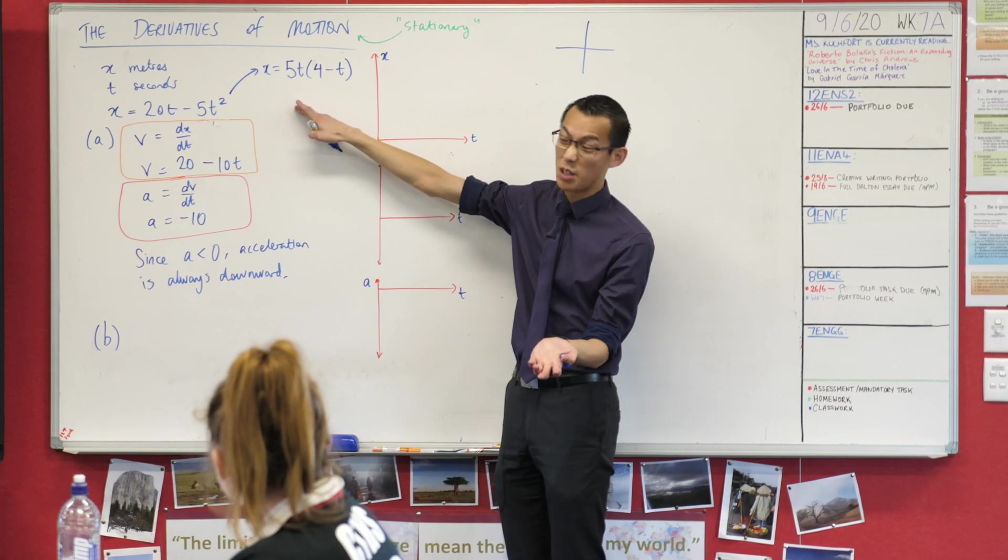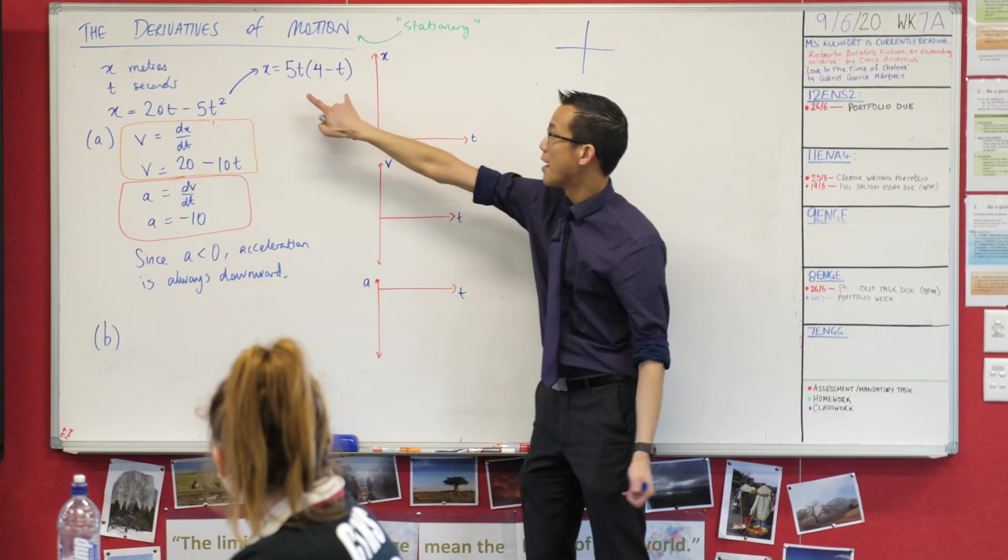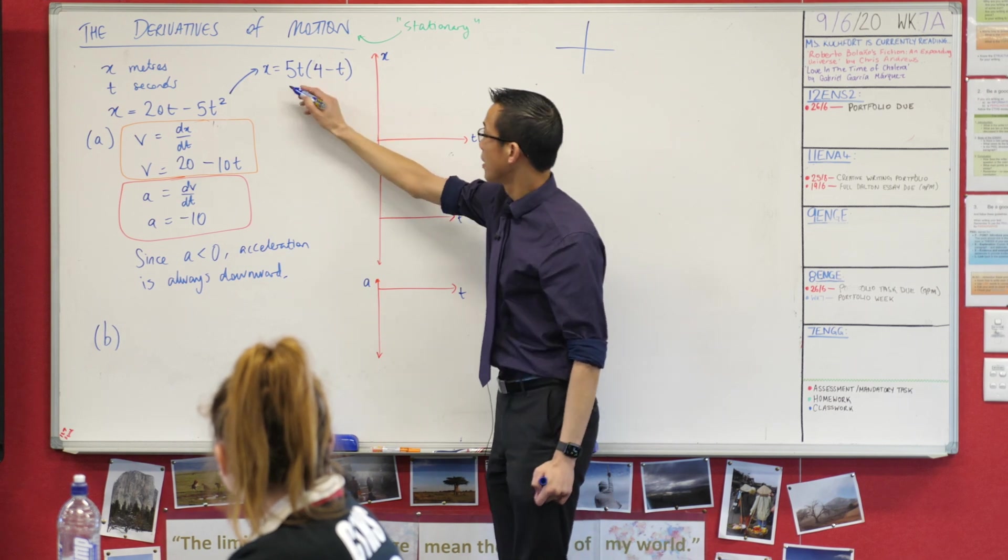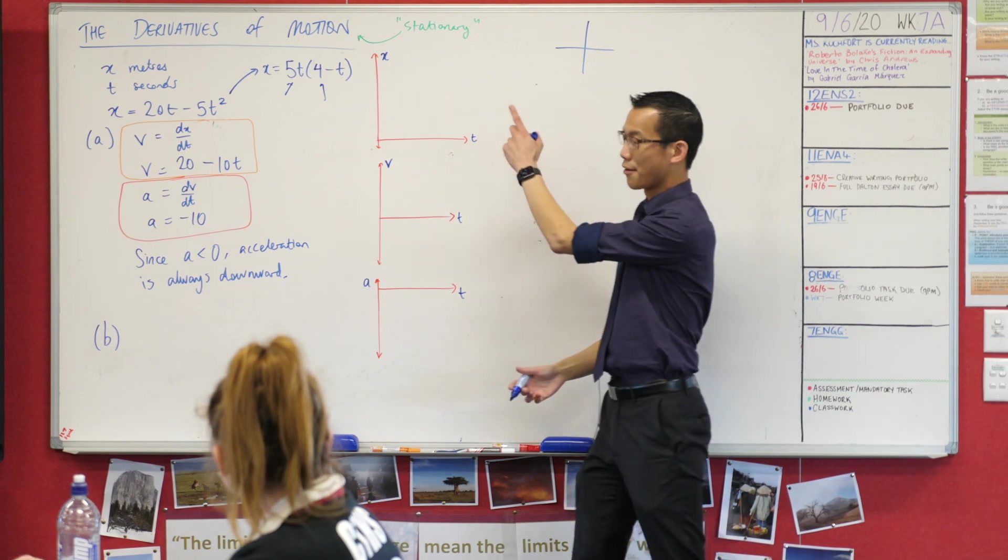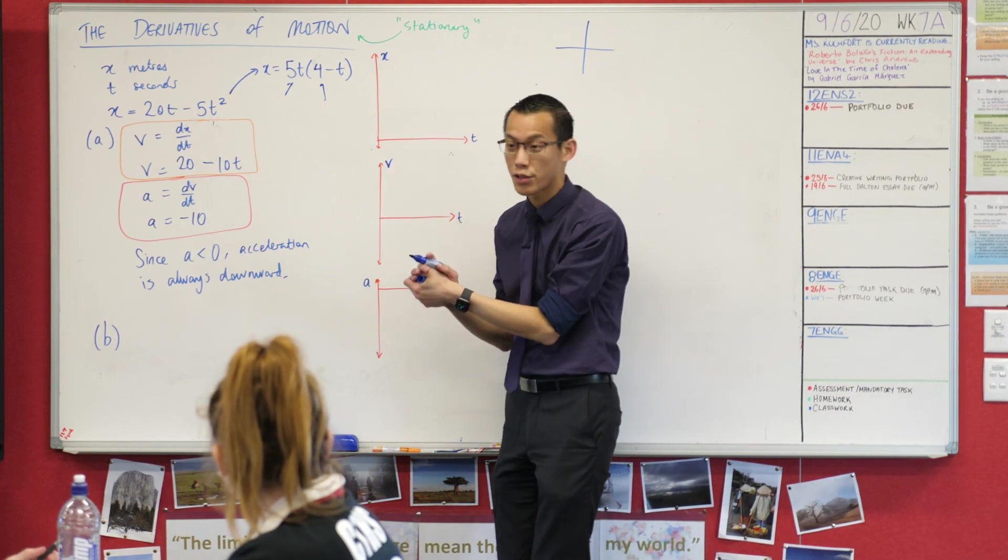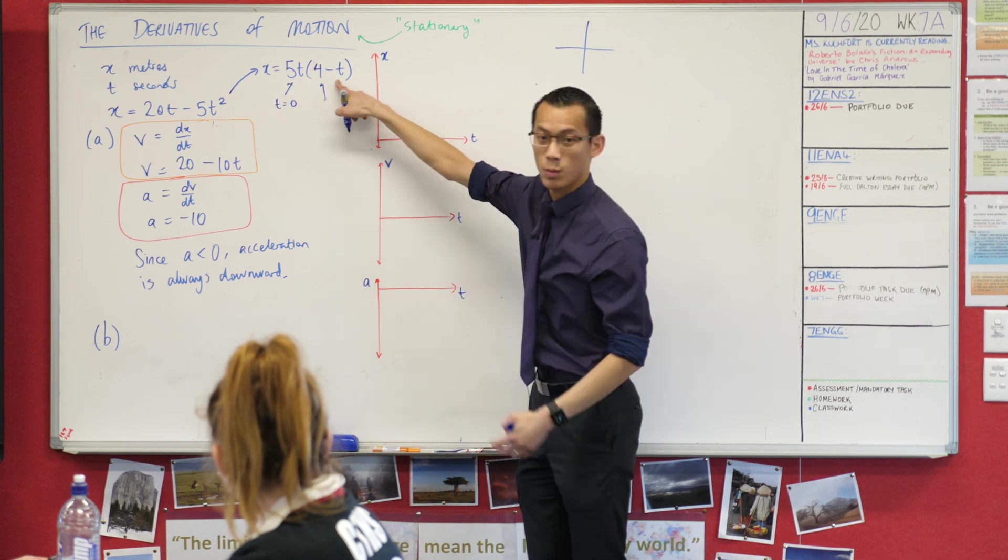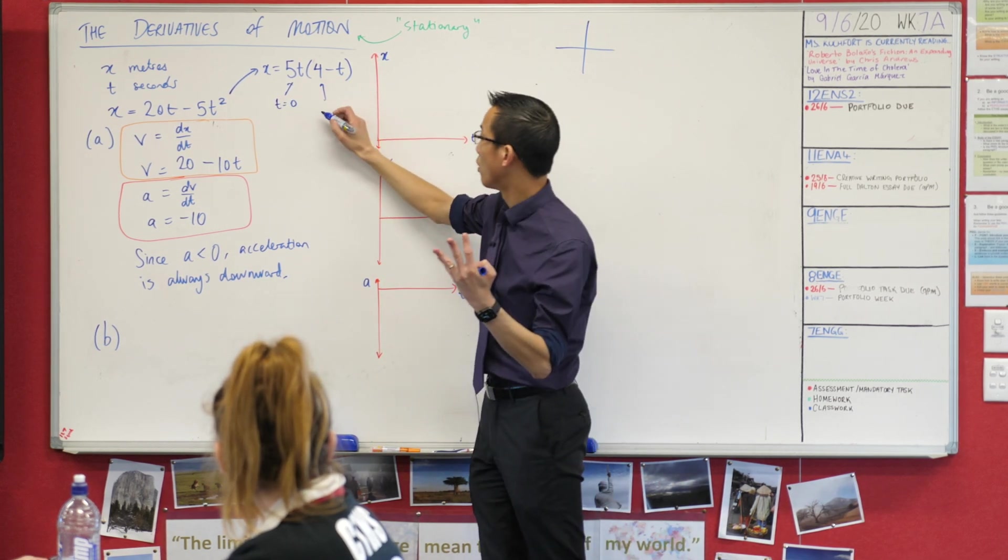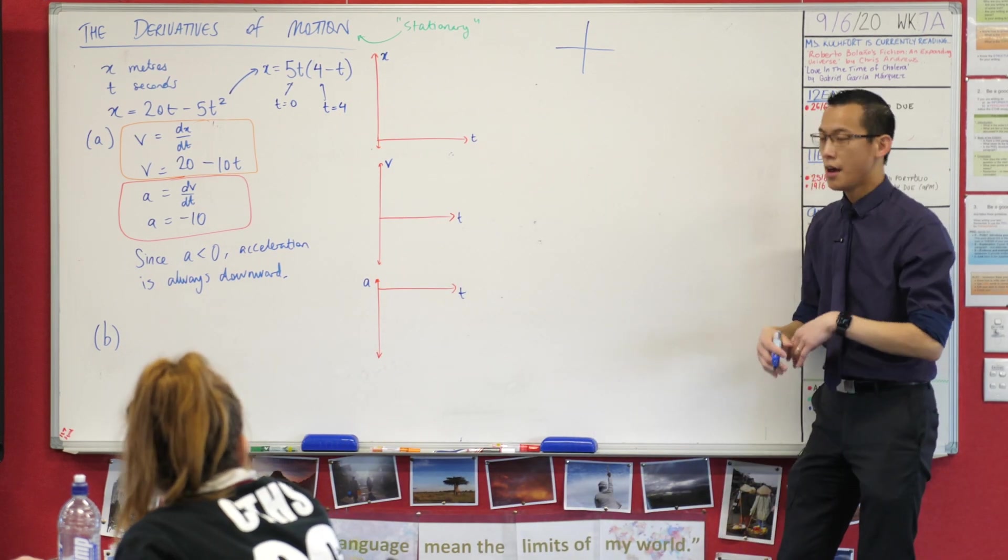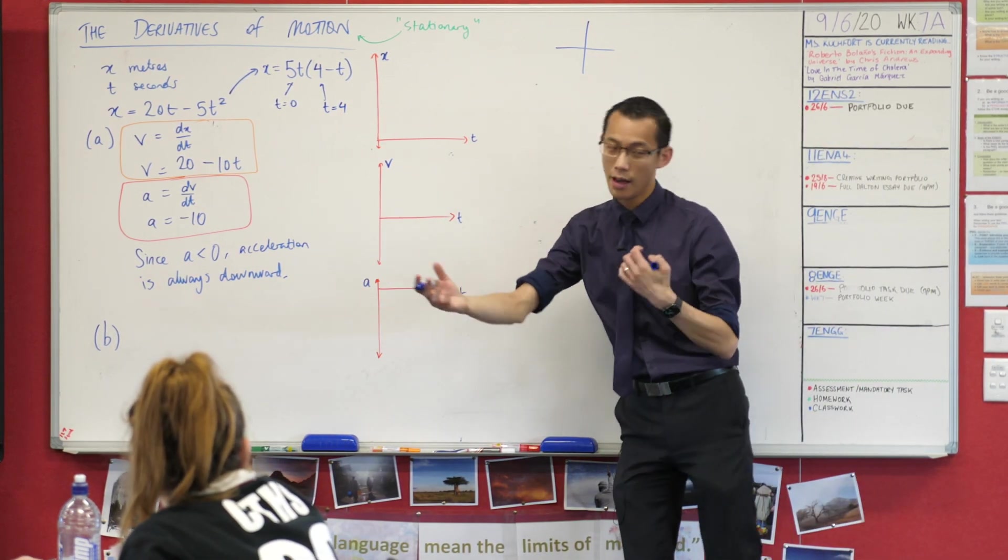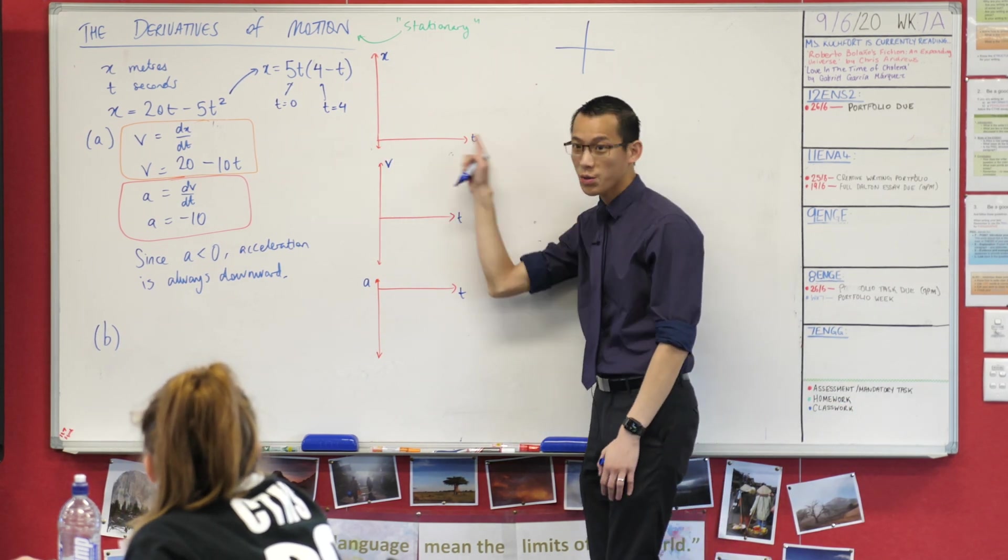You can see I factorized because factorizing a quadratic helps you find roots real easy and you kind of need to know where roots are in order to draw the thing. Have a look at this, I factorized it. Here's one factor, here's the other. Each one tells you a root. 5t, what does that factor tell you? Where's the root for that? It's t equals zero, right. What about this one here? t equals 4.